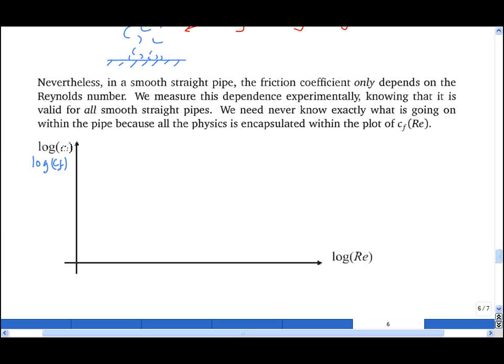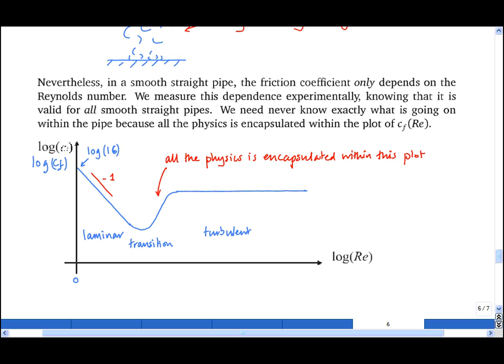So if I plot the log of the friction factor Cf against the log of the Reynolds number, I know that in the laminar region I have a straight line with gradient minus one. I know that in the turbulent region log of Cf tends to a constant, and in the transitional region, which is the one that's really difficult to model, I can measure how Cf depends on the Reynolds number. And all the physics of what's going on inside the flow is encapsulated within this plot. And to achieve useful results, I don't even need to know exactly what is going on.